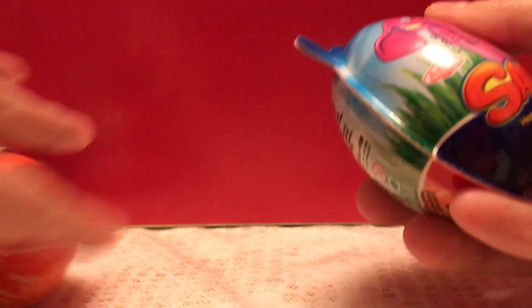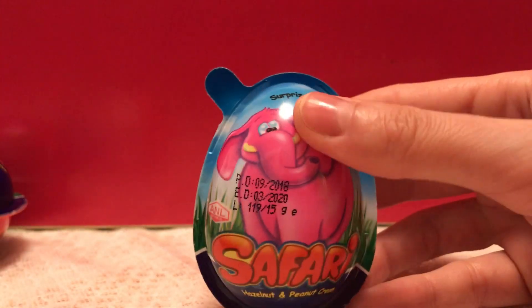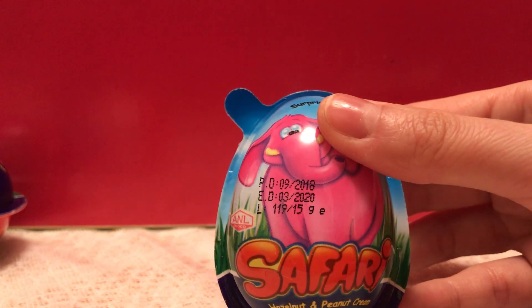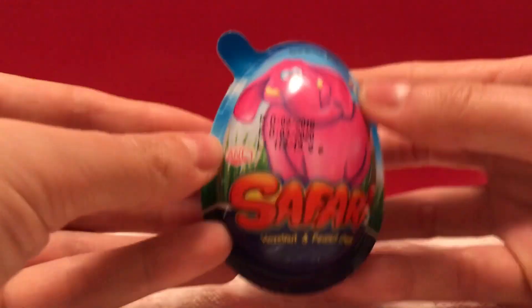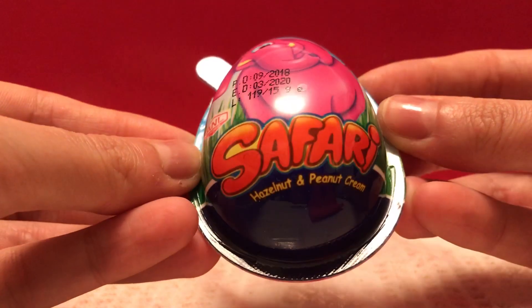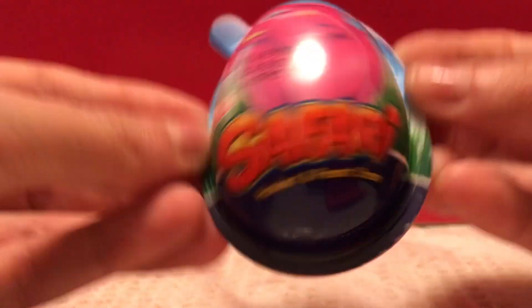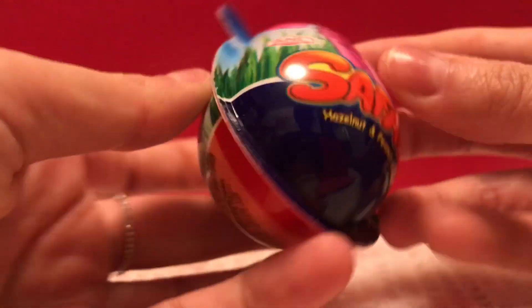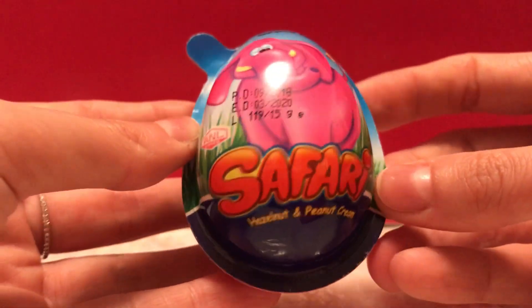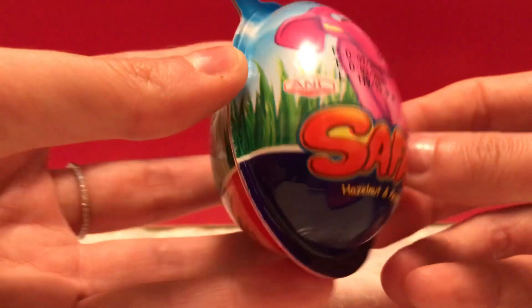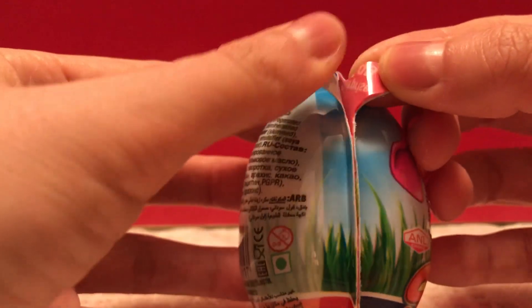I picked one. I picked the pink elephant. So this one has hazelnut and peanut cream inside. Interesting. This will be a different flavor of chocolate. This is the Safari surprise egg collection and let's open it up.